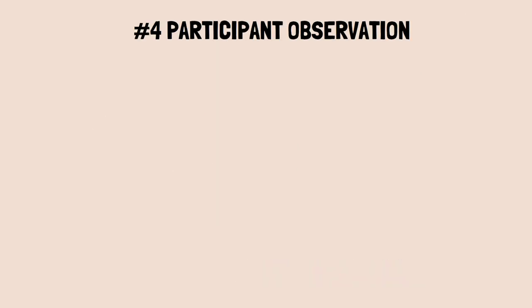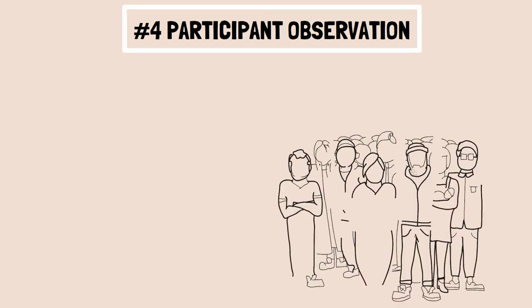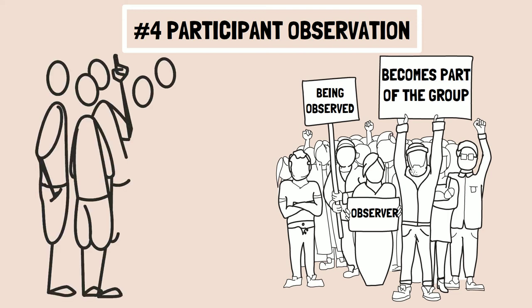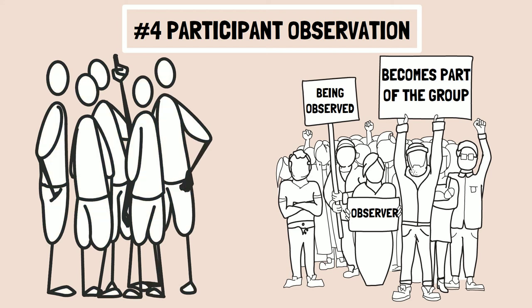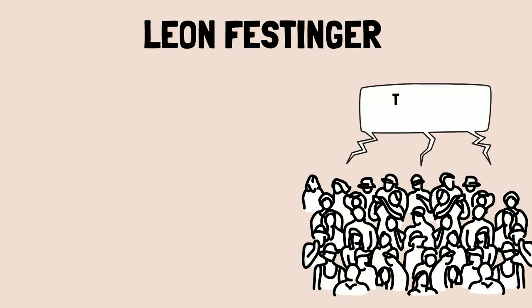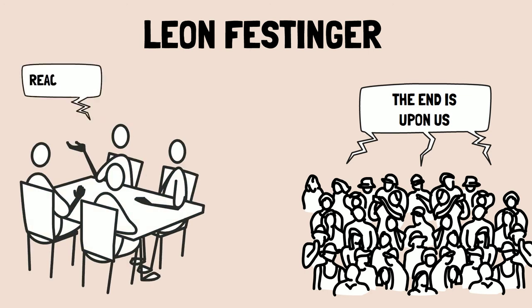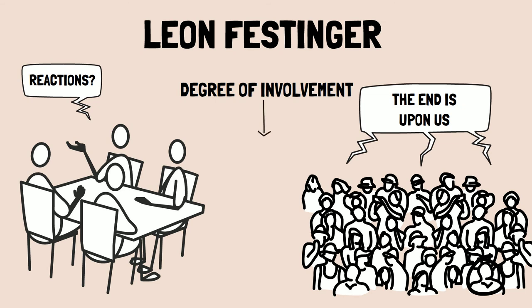4. Participant Observation: In participant observation, the observer becomes a part of the school or the group of people being observed. Here, the observer takes some time to establish a rapport with the group so that they can start accepting him as one of the group members. This approach was used by Leon Festinger in a famous study into a religious cult who believed that the end of the world was about to occur. He joined the cult and studied how they reacted when the prophecy did not come true. In order for this type of research to be successful, he would have had to join the religious cult and become part of the group so that they would open up to him and reveal their thoughts about the prophecy. However, the degree of involvement of the observer with the group being observed would vary depending upon the focus of the study.